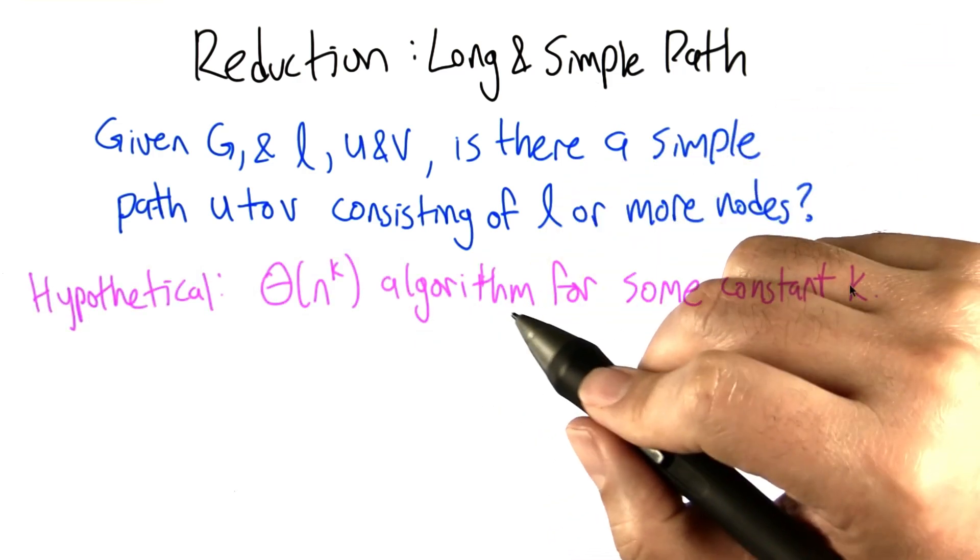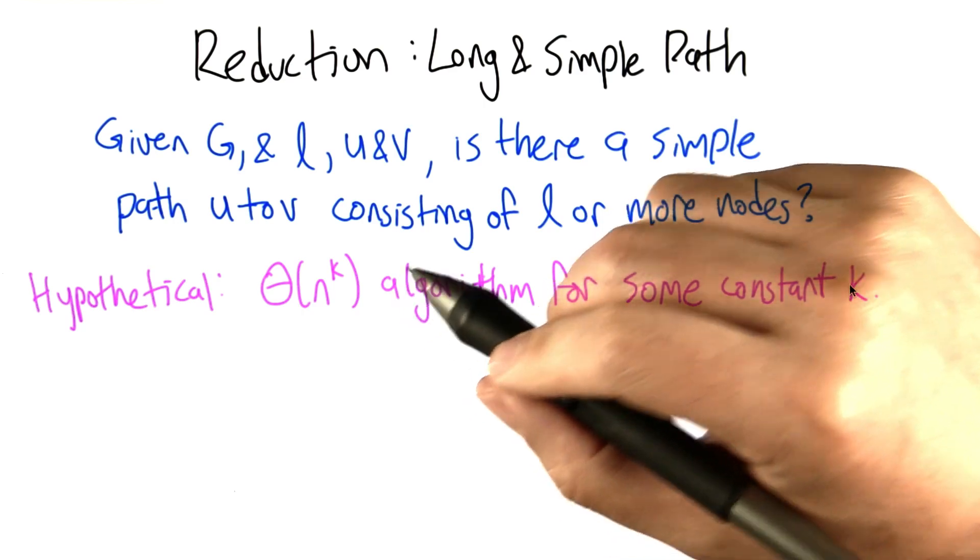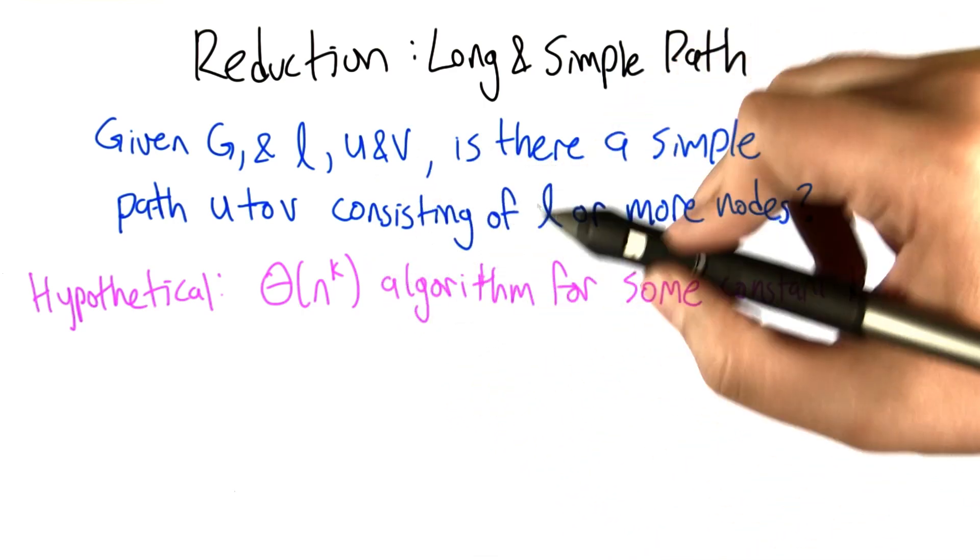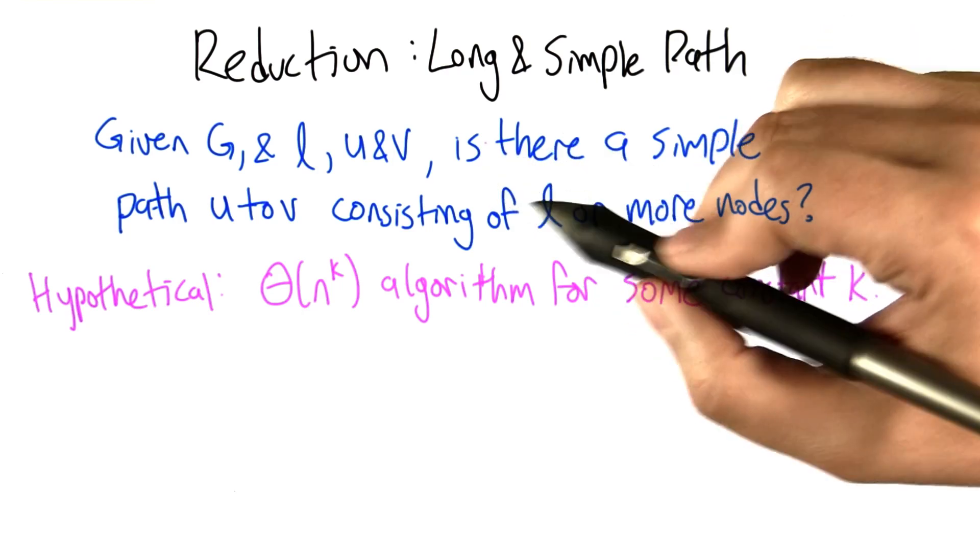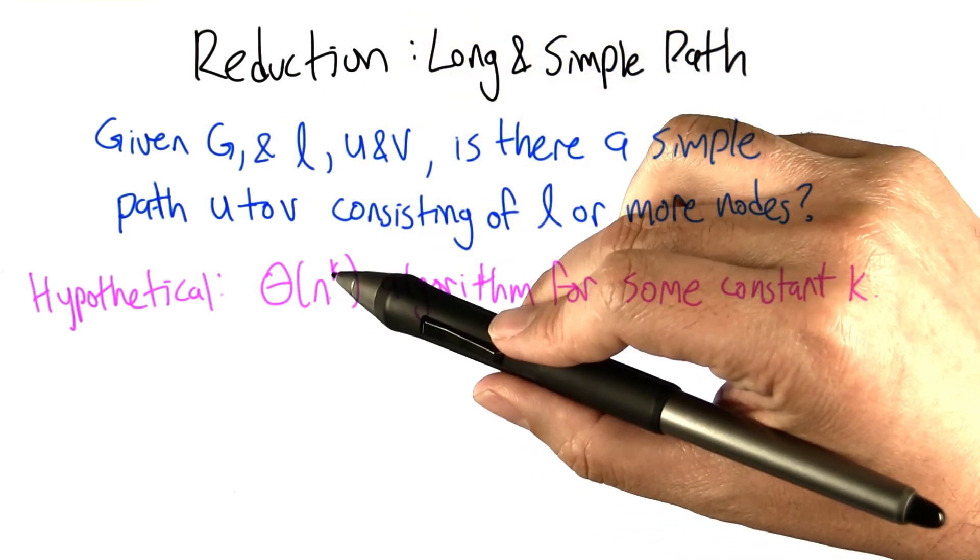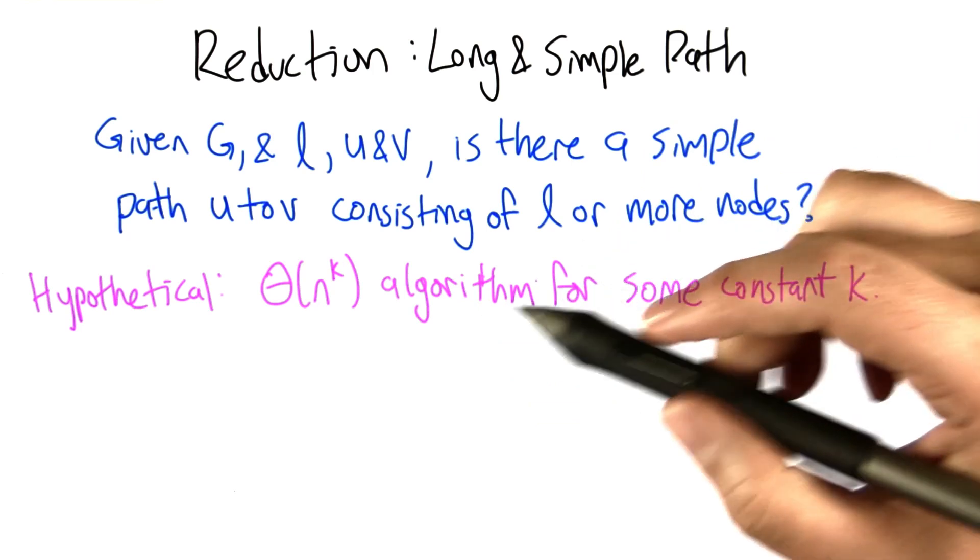And we're going to imagine, and I'm saying imagine because I actually don't know whether this is true or not, but we're going to imagine that there's an algorithm that solves this decision problem. It says yes or no correctly, and its running time is n to the k for some constant k, like 2.